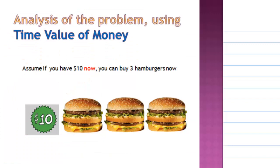To understand the solution, you must understand the time value of money. Assume you have $10 now, and you can buy 3 hamburgers now using your $10.